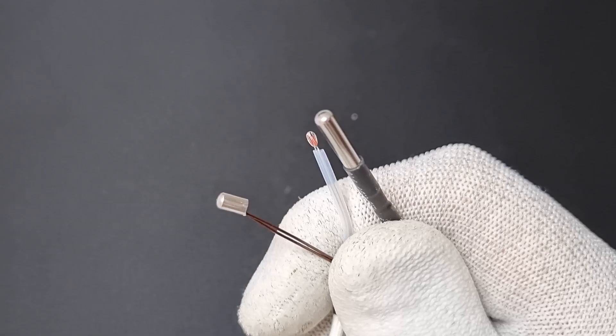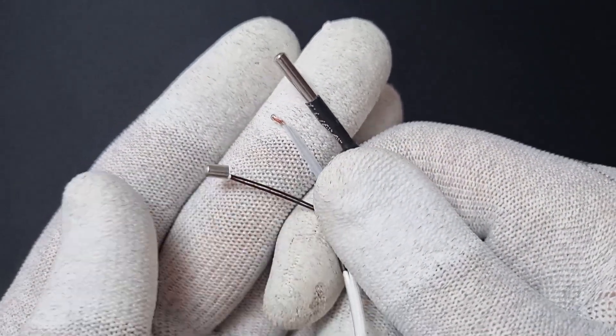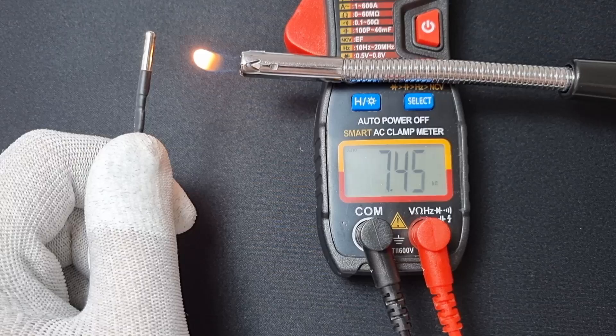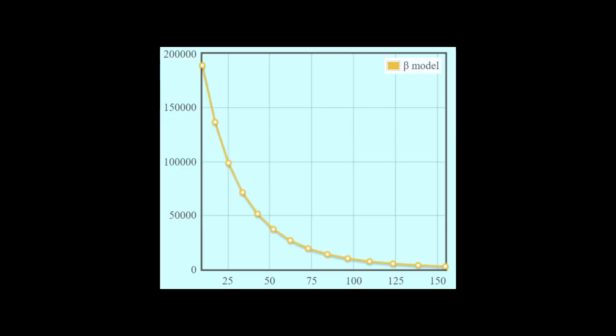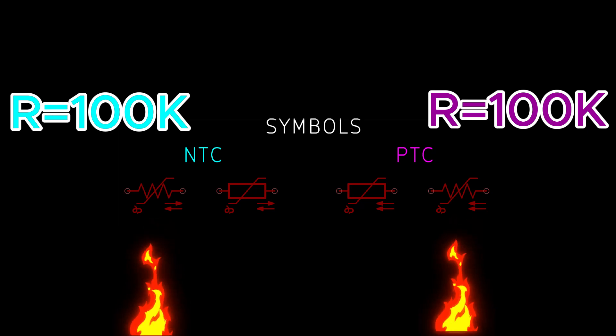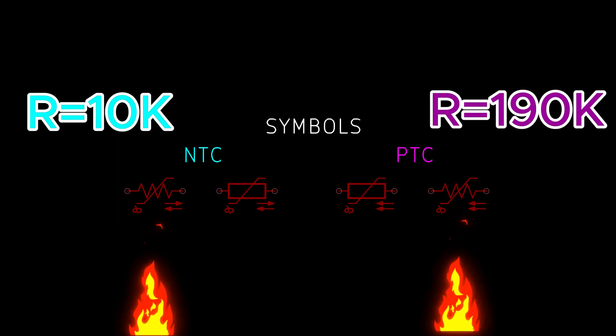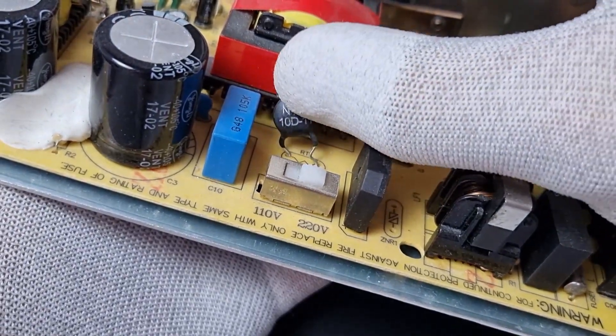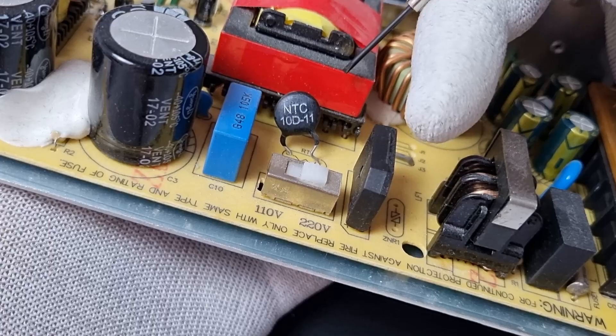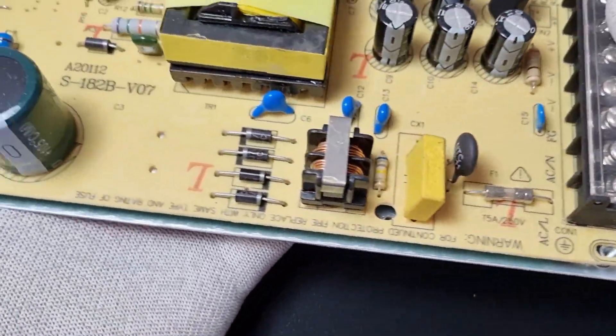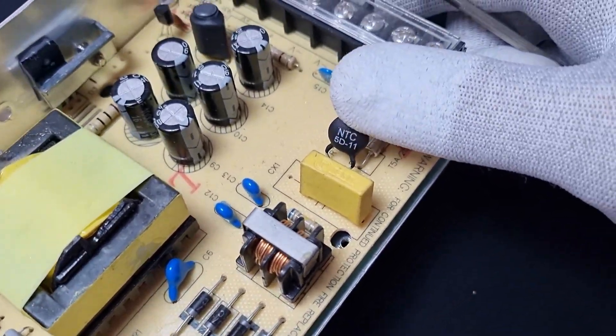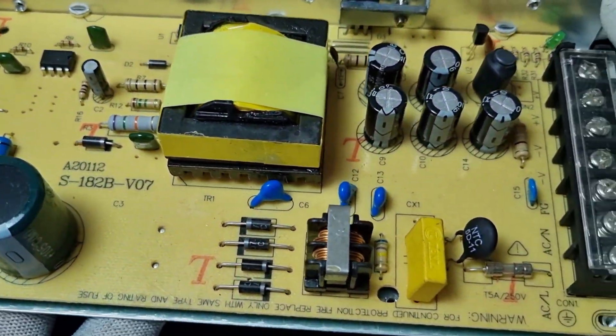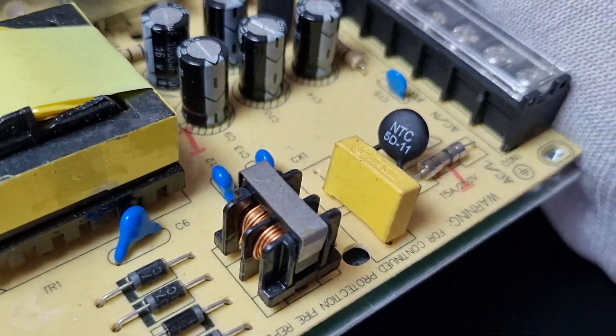Now let's talk about NTCs, which stand for negative temperature coefficient resistors. As the temperature increases, the resistance of an NTC decreases. Although this relationship is not linear, it looks more like this. We also have PTCs, which are similar but with a resistance that increases as the temperature rises. NTCs are often used in power supplies to limit inrush current, which is the initial surge of current when a power supply is turned on. This surge is much higher than the normal operating current and can damage components or trip circuit breakers. NTC thermistors limit this inrush current at startup by having a higher resistance when cold, which decreases as they self-heat, allowing normal operation.